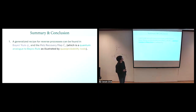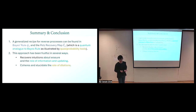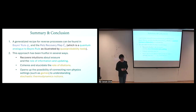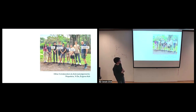To summarize: a generalized recipe for reverse processes can be found in classical Bayes' rule and the PETS recovery map, which can be seen as its quantum analog as expressed by the QPR framework. This approach recovers nice intuitions about the role of information and updating, coheres with the dilation picture, and opens up the possibility of connecting non-physics settings - such as games like UNO - to understand stochastic thermodynamics. Thank you very much.